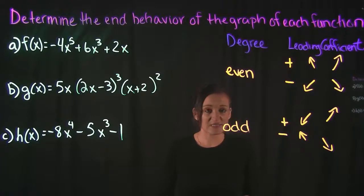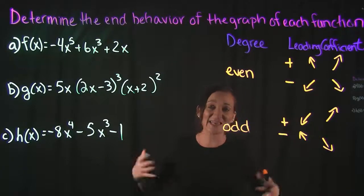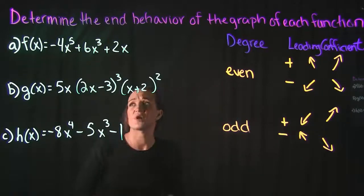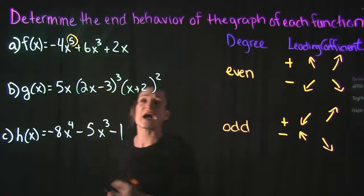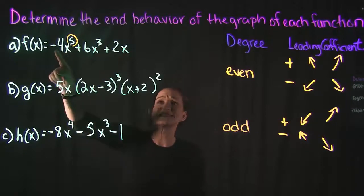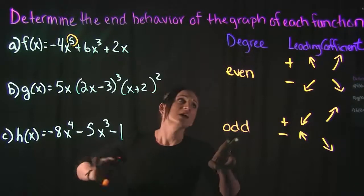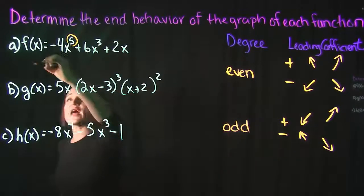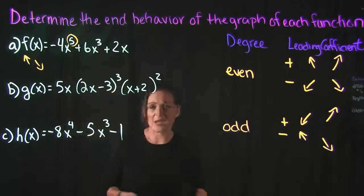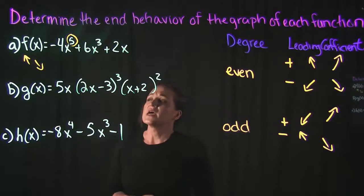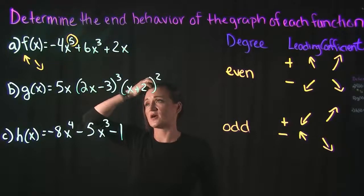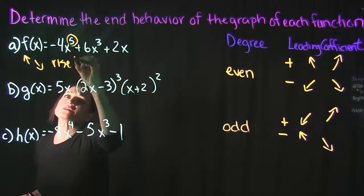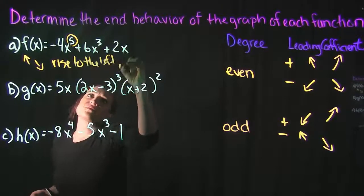As long as you know these things, you can state the end behavior of any given function. Let's take a look at Example A. Example A says f(x) is equal to negative 4x to the fifth plus 6x cubed plus 2x. The degree of this function is five — that's the highest power — and the leading coefficient is negative. So the degree is five, which means it's odd, and the leading coefficient is negative. That means it's going to rise to the left and fall to the right. I like to use the arrows just as a visual — the graph is going to kind of look like that shape. You can also say: rise to the left, fall to the right.